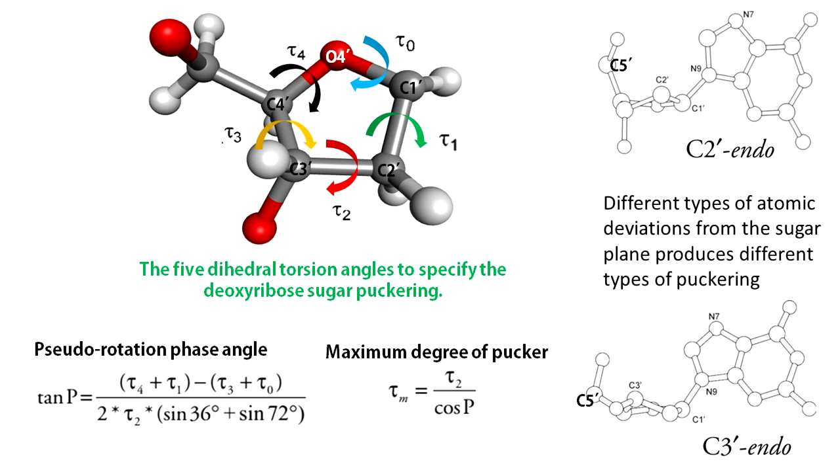For example, I have shown you two examples where C2' and C3' atoms are in endo form.